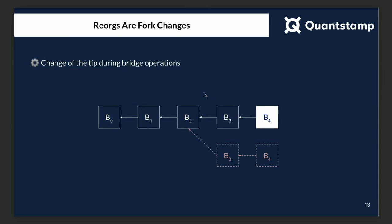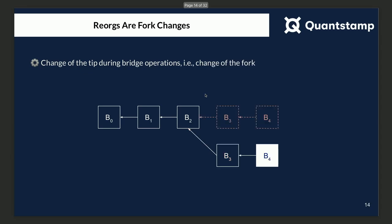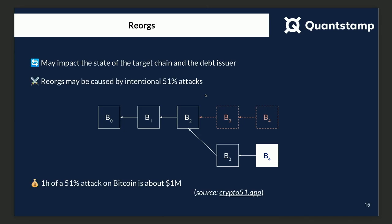The situation gets much more interesting when we have chain reorganizations, called reorgs. A reorg is a change of the tip during bridge operations, because the bridge has to pick one of those forks, and that may need to be reflected on the target chain. Reorgs may occur organically or may be caused by an attack, and they may impact the state of the target chain and the debt issuer. This attack is quite realistic — even one hour of a 51% attack, according to Crypto51, is about $1 million.